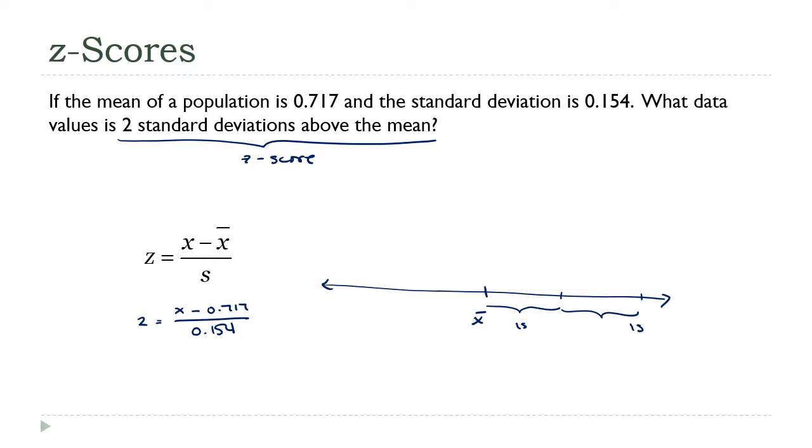I'm going to multiply both sides by 0.154, and I'm actually going to hold off on doing the arithmetic for just a second. Then I'll add 0.717 to both sides. You see what I ended up doing here? I ended up doing exactly what I described. I took two times the standard deviation, and I added that to the mean. And if you do that, you end up with 1.025.